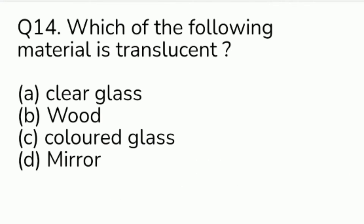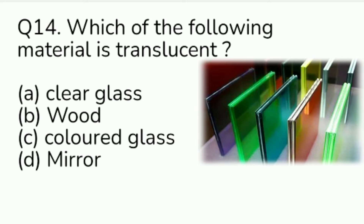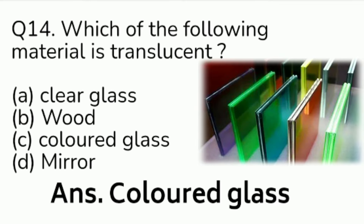Question number 14. Which of the following materials is translucent? Option A: clear glass. Option B: wood. Option C: coloured glass. Option D: mirror. Answer is Option C, coloured glass.